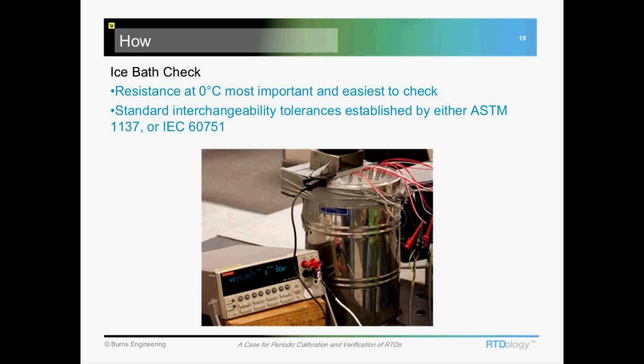The next step with an RTD would be to check it in an ice bath. This is probably the easiest kind of point to check. Very low uncertainty associated with it because you don't have a lot of equipment involved. You've got an insulated container, some ice, and typically some kind of ohm meter to measure the probe.